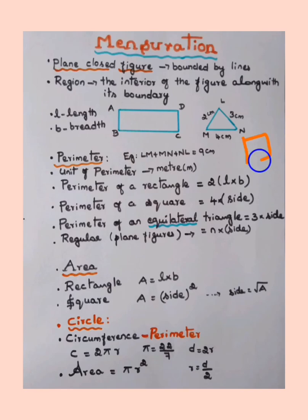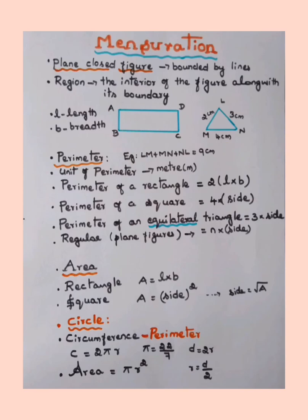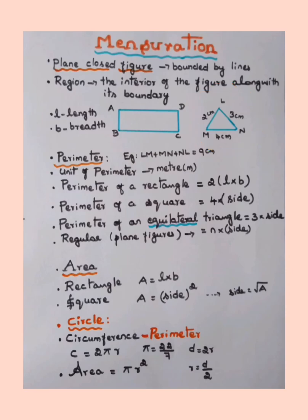For a square, since length equals breadth, the perimeter is 4 × side. For a square, instead of adding all four sides, just multiply 4 by the side length. For an equilateral triangle, instead of adding all three sides, multiply 3 by one side. For any regular plane figure with n equal sides, the perimeter is n × side.